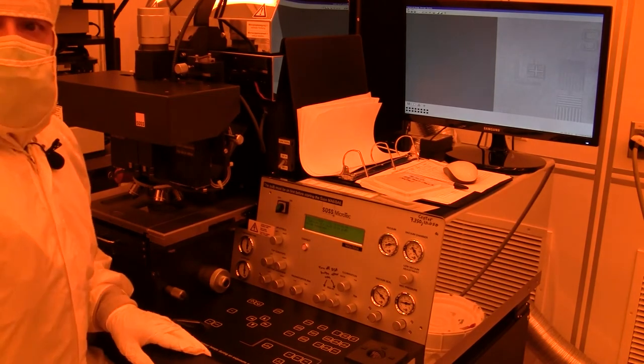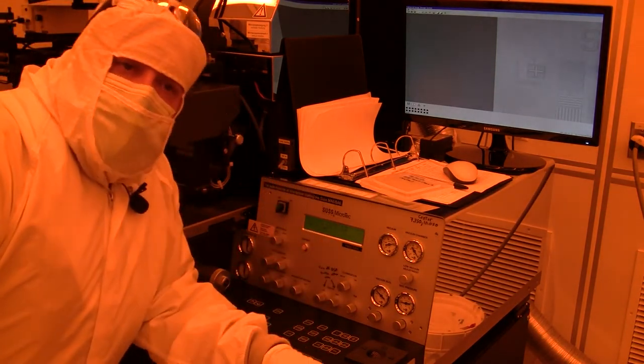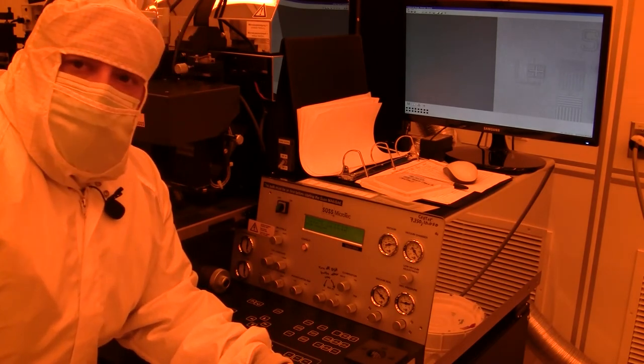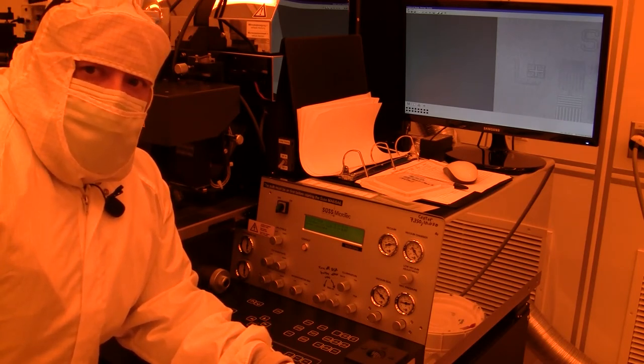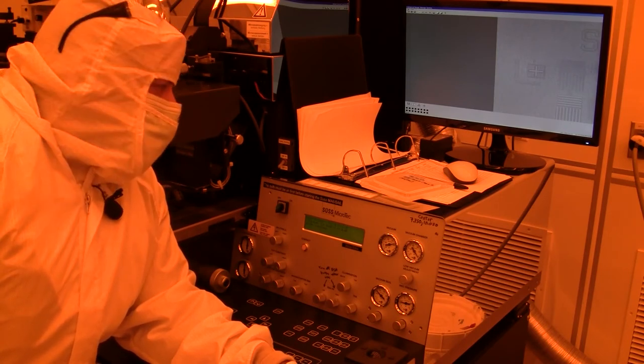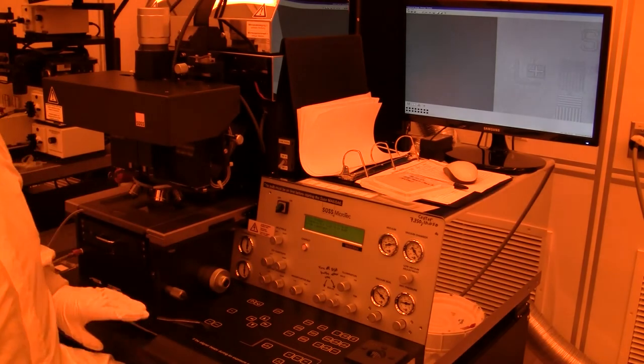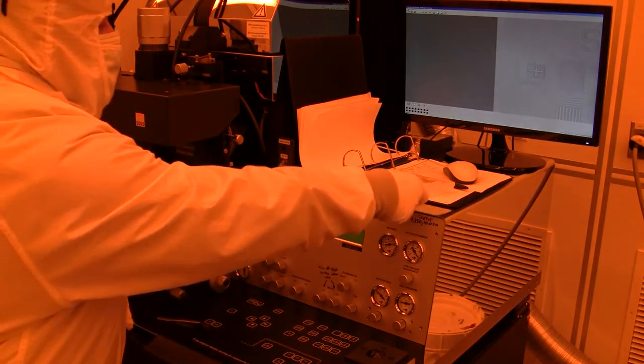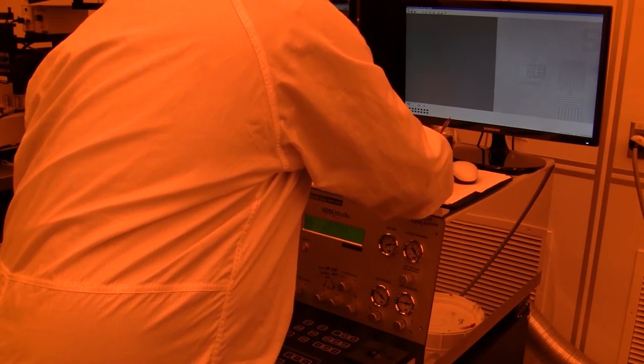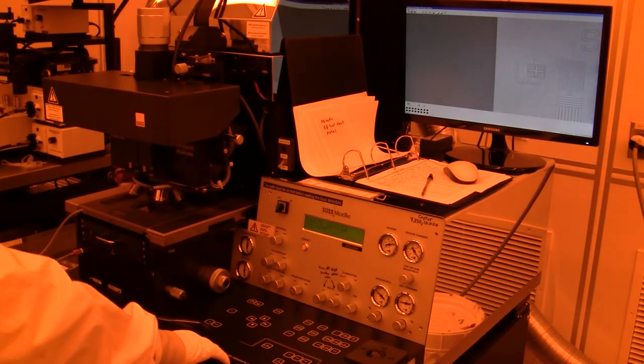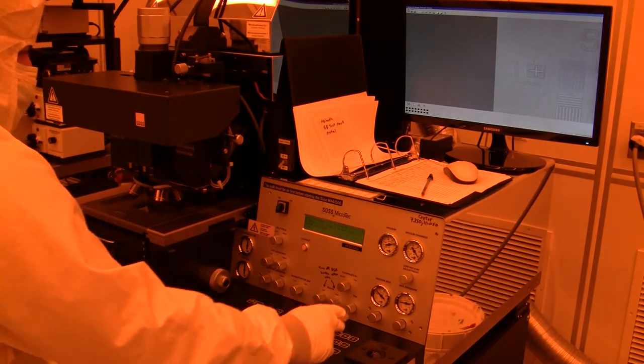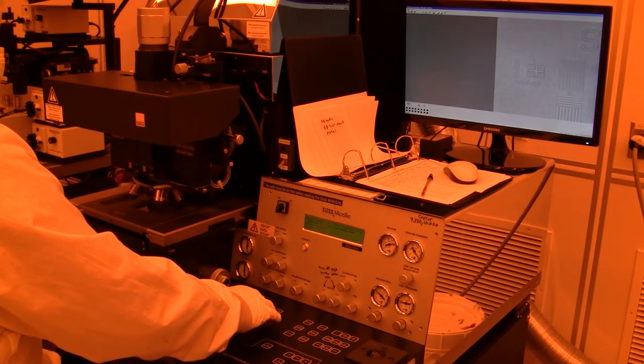So now we're ready to do an exposure. So what we're going to do is check our parameters. The exposure is a function of the photoresist. Thicker the photoresist, usually more exposure time, and this is ultraviolet light. So I checked our handy dandy log book, which is currently 1813, 12 seconds. So I'm going to change this parameter to 12 seconds.